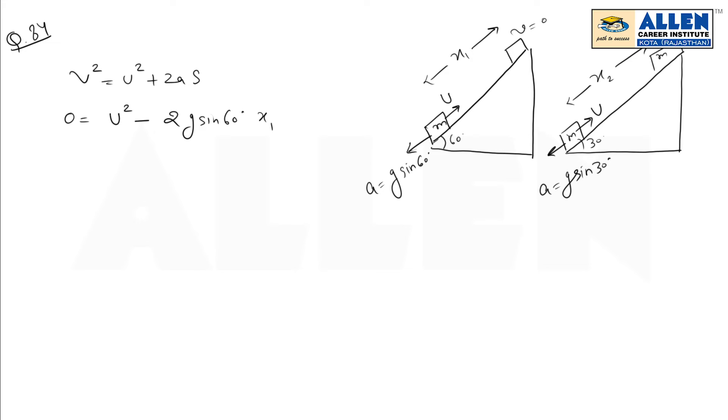The s is x1, so I can write x1 = u²/(2g sin 60). Similarly, x2 = u²/(2g sin 30). Equation first, equation second.